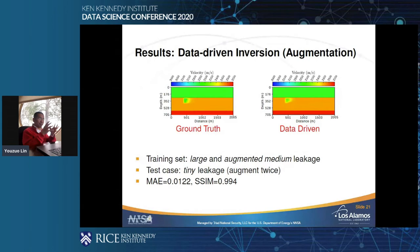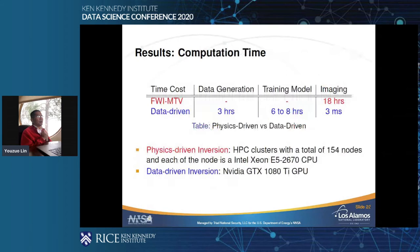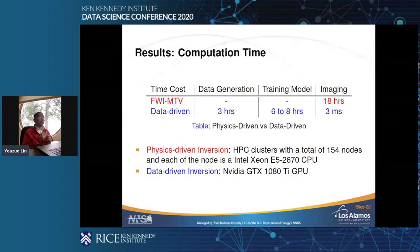This is the comparison of computational time. FWMTV, the physics-based method, requires no data generation and no training — all time is spent on imaging. For the machine learning methods, you need time to prepare data and train a model, but once done, the imaging procedure is very efficient.